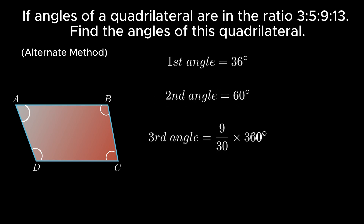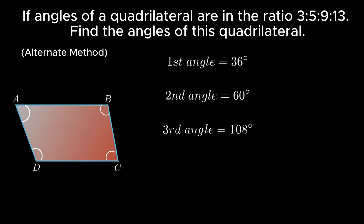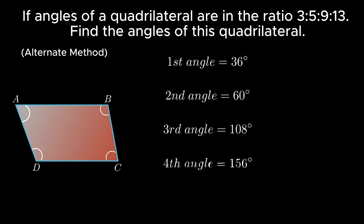The value of the third angle equals 9/30 × 360° = 108 degrees, while the fourth angle is calculated as 13/30 × 360° = 156 degrees. Hence the problem is solved.